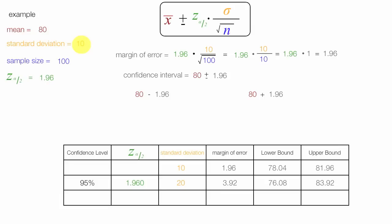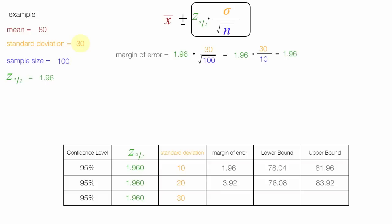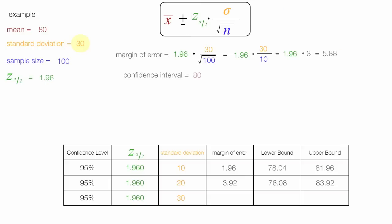Now I'm going to increase the standard deviation to 30 and make the same calculations again. The margin of error equals 1.96 times 30 divided by the square root of 100, which equals 1.96 times 30 divided by 10, which equals 1.96 times 3, and this equals 5.88. The confidence interval is equal to 80, the mean, plus or minus the margin of error, which in this case is 5.88.